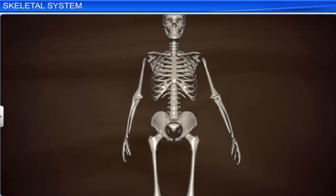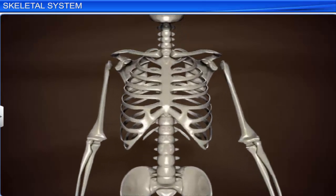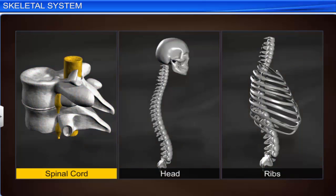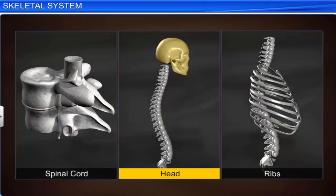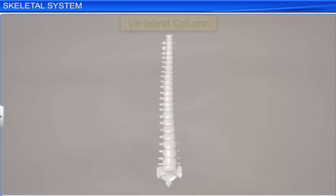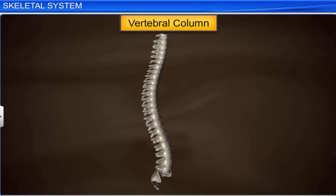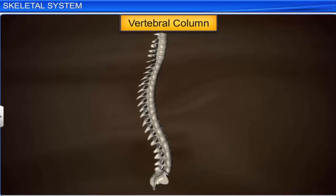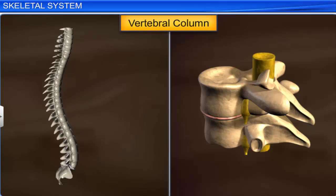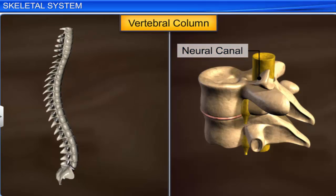The vertebral column has three main functions: it protects the spinal cord, supports the head, and serves as the point of attachment for the ribs. It consists of 26 differently shaped bones called vertebrae. Each vertebra has a central hollow portion called the neural canal, through which the spinal cord passes.